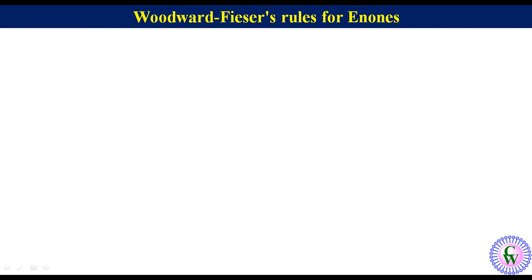Hello friends, today we are going to discuss Woodward-Fisher rules for enones. In the previous lecture on Woodward-Fisher rules for conjugated dienes, we already learned different terminologies like homo- or heteroannular conjugated double bonds, exocyclic double bond, and double bond extending conjugation. The link for that lecture has been shared in the description, so we are not going to discuss those terminologies here.